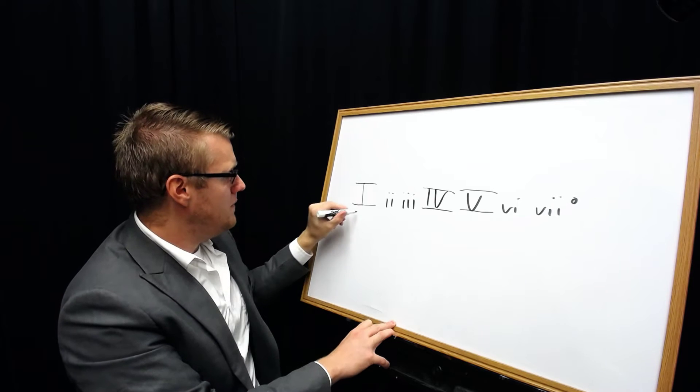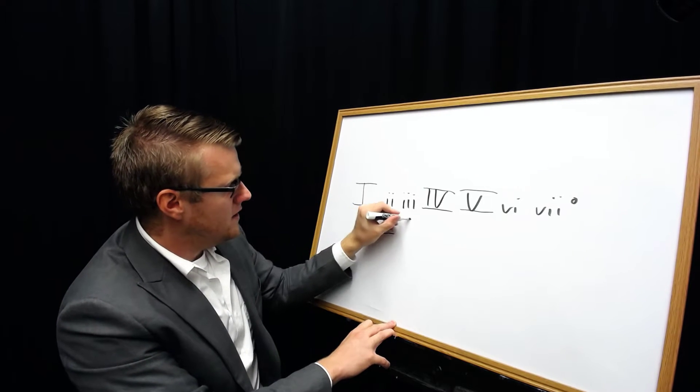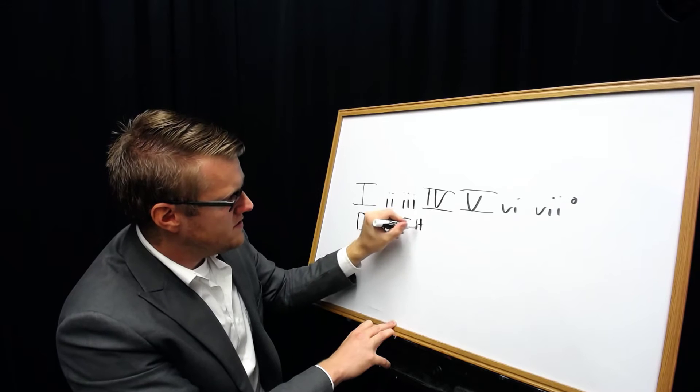Now let me write down the D major scale. The D major scale has two sharps, F sharp and C sharp.